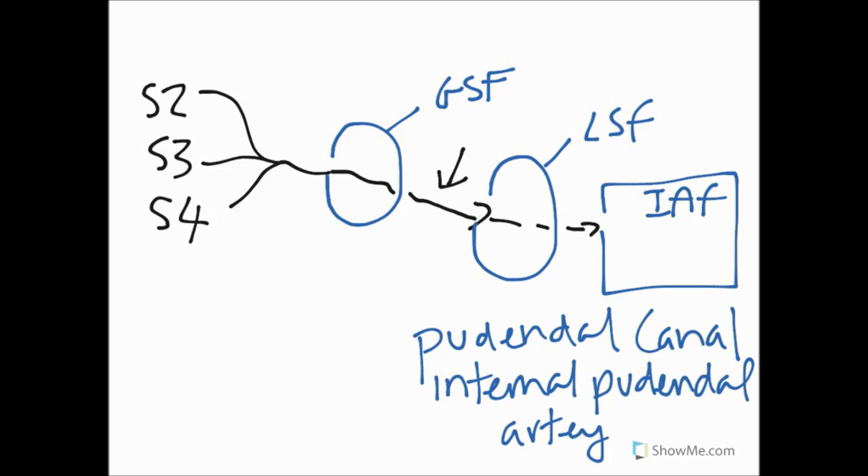It comes out of the greater sciatic foramen inferior to the piriformis muscle, which is a really important landmark in the gluteal region. It then hooks around through the lesser sciatic foramen, which of course is formed by the sacrotuberous ligament and the corresponding sacrospinous ligament in order to enter this ischial anal fossa, which is inside the anal triangle.